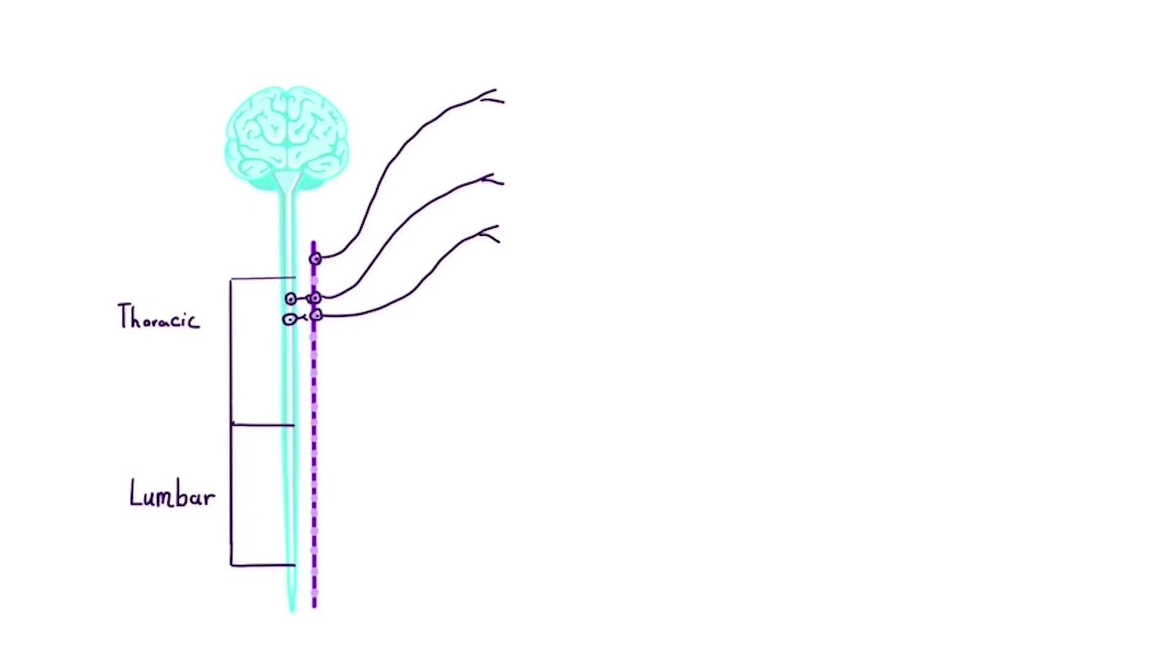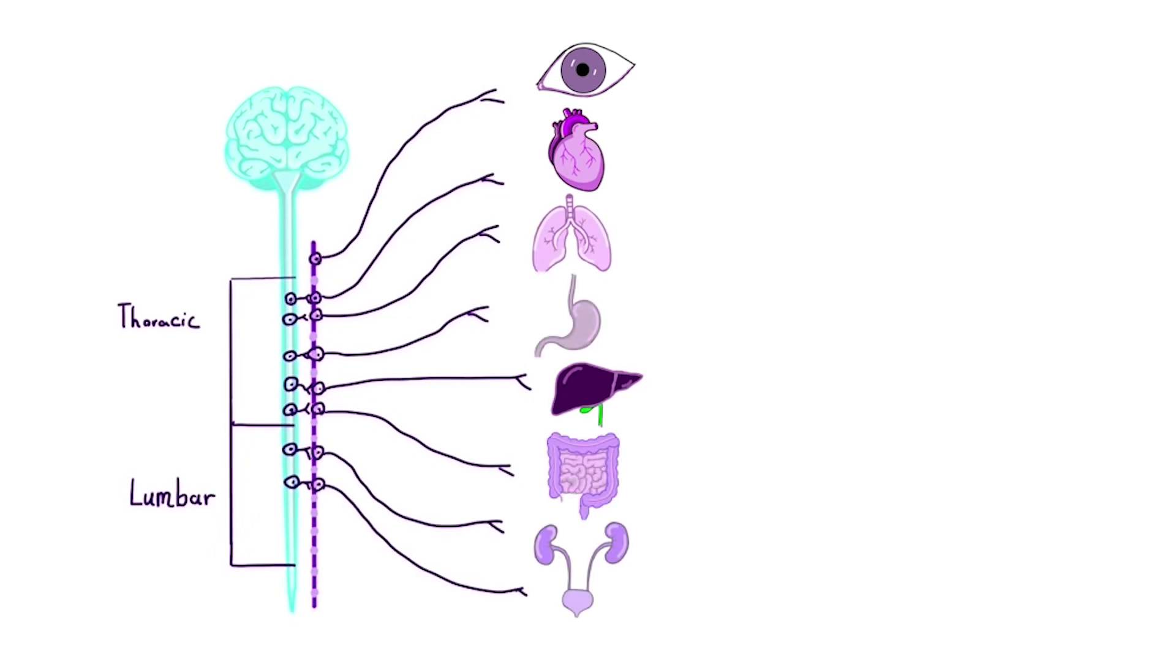Before we go any further, it's good to know where each of these nerves actually starts. The sympathetic nerves come out of the thoracic and lumbar regions of the spinal cord. After they leave, they synapse with a second set of nerves, and it's this second nerve that finally reaches the target organs. And what are those target organs? They include the pupils of the eyes, the heart, the lungs, the digestive system like the stomach, liver, and intestines, the adrenal glands, and the bladder.